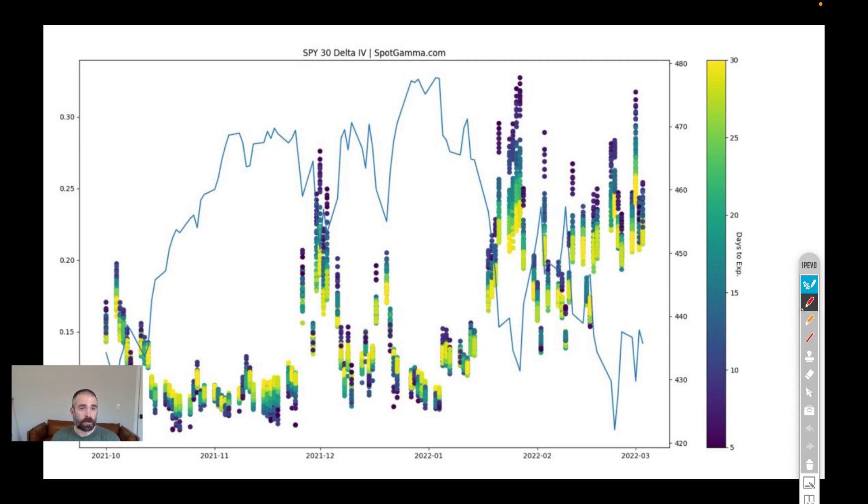In previous videos here, we've talked about how that uncertainty is driving negative gamma. Basically, put positions are dominating the way the market is shifting around right now. In that context, we want to talk about the problem with trying to buy call options here.